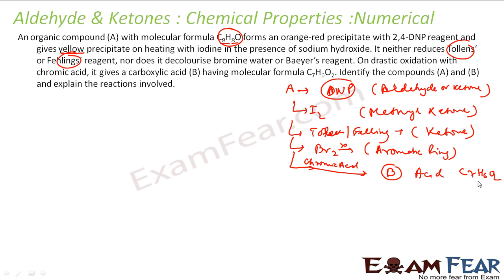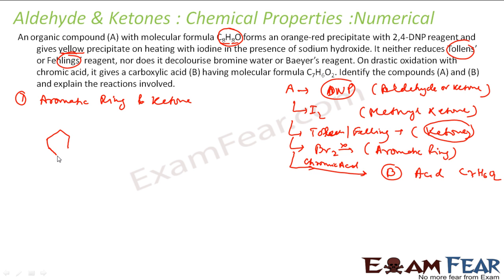It is now pretty clear that compound A contains an aromatic ring and is a ketone. Starting with benzene (C6H5), subtracting from C8H8O leaves C2H3O. Since it is a ketone and not an aldehyde, we draw the carbonyl group between the ring and the remaining carbon, placing three hydrogens on that carbon.